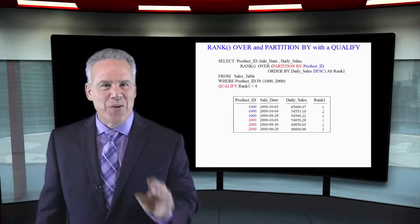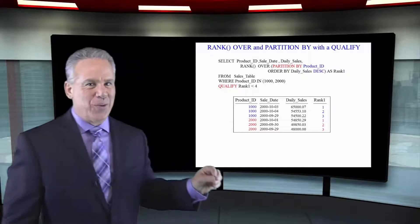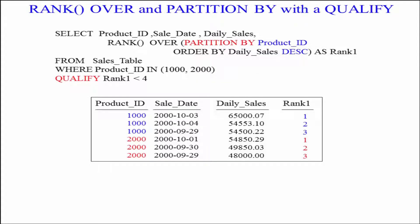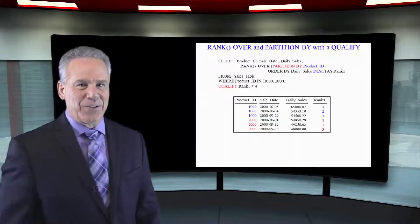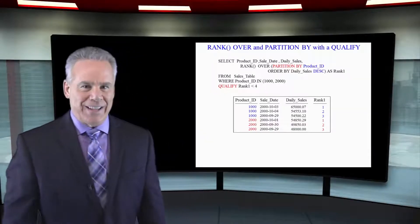We're going to bring it all together right now, using the partition statement and qualify in the same SQL. We're ranking RANK() OVER, partition by product ID — notice there's no comma — then order by daily sales descending as rank one. Then we put a qualify statement at the bottom that says qualify rank one less than four. What are we getting? We're going to get the top three daily sales per product ID. That's the best way you can use these commands together.